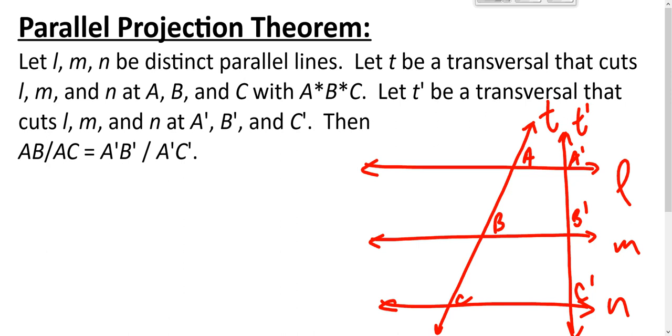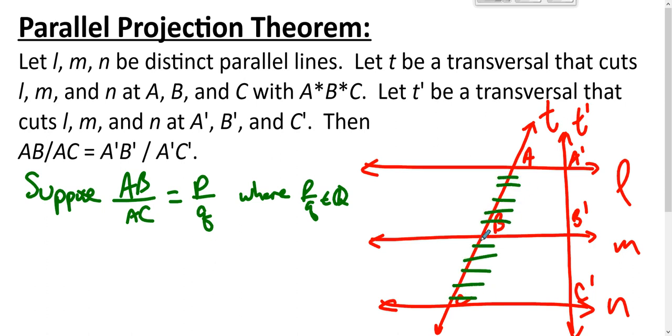So here's the idea. The idea is we suppose that AB is to AC as P is to Q, where P over Q is some rational number. And then what we do is we break up this distance into little Qths, right? We break these up into little Qths, and there are P of the Qths up here.